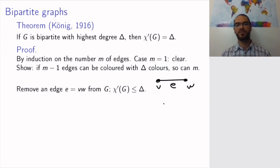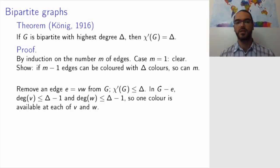the remaining graph will still be bipartite. Since the highest vertex degree in the original graph was Δ, when you have removed this edge, v and w had degree at most Δ. So after removing the edge, they have degree at most Δ-1.